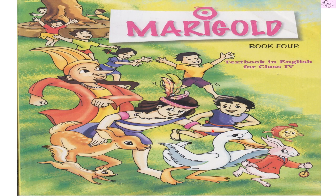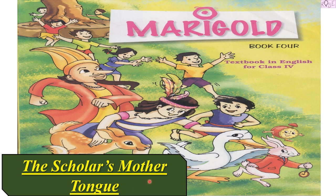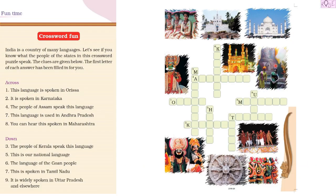Hello friends, how are you? Today we are going to do another fun activity taken from your book Marigold Class 4 NCERT, from the chapter 'The Scholar's Mother Tongue.' To get to this activity, open your book and turn to page number 110. Let's see what we have to do — it's called Crossword Fun. India is a country of many languages. Let's see if you know what the people of various states speak.